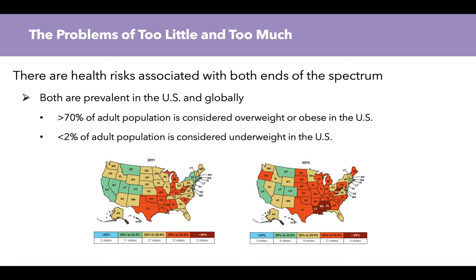We must recognize that there are problems of there being too little and too much, so there are health risks associated with both ends of the spectrum in terms of body weight and fat mass. Both underweight and obesity are prevalent in the United States and globally. Here in the U.S., greater than 70% of the adult population is considered overweight or obese, as opposed to less than 2% being considered underweight. We do have regional differences in body size, with the southeastern United States usually having the highest amount of people with overweight and obesity.